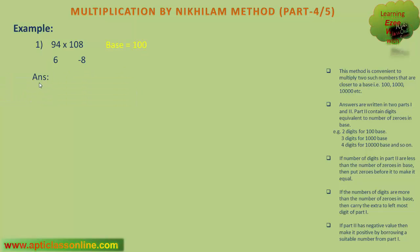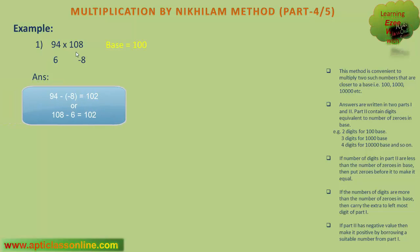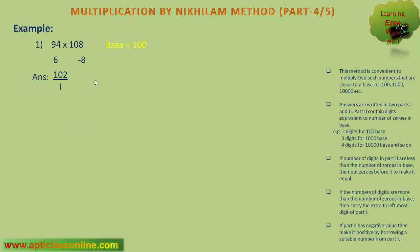Now we can write down the answers. The answer will have two parts. In the first part, we will write the difference of 94 and minus 8, or 108 and 6. In either case, it will be 102. This is the first part. The second part, written in continuation to the first part, will be the multiplication of 6 and minus 8, and it will be minus 48.